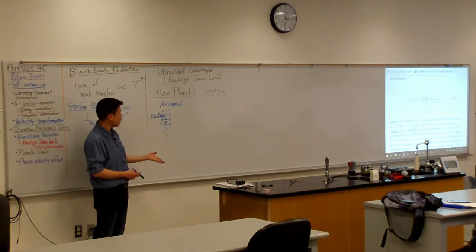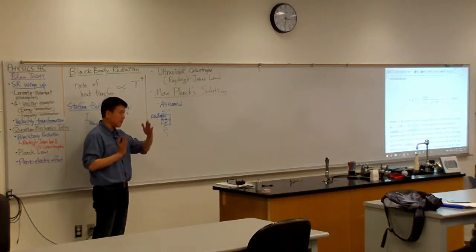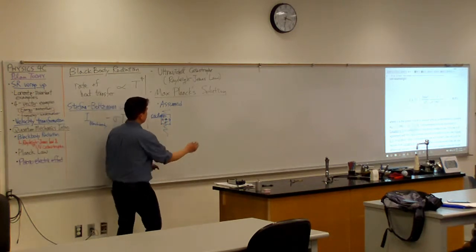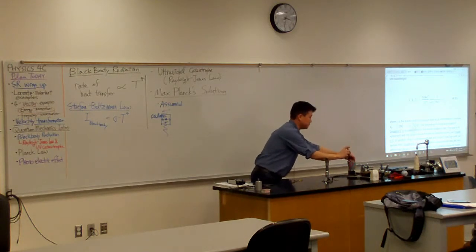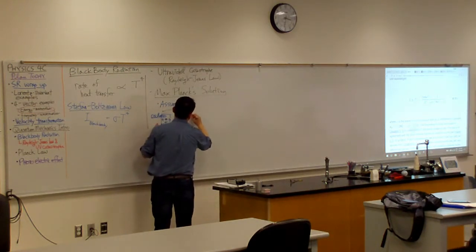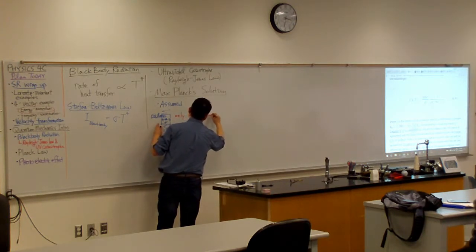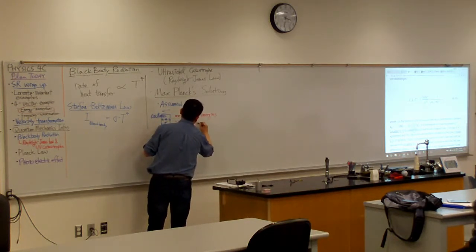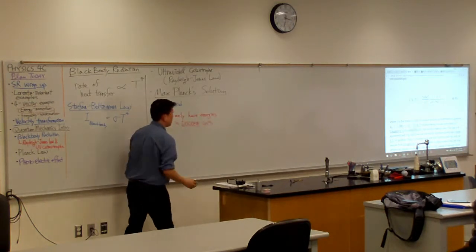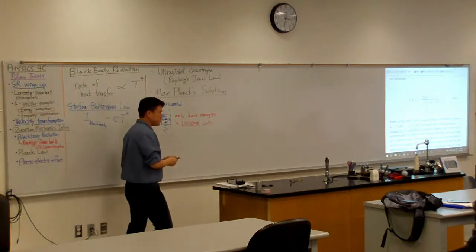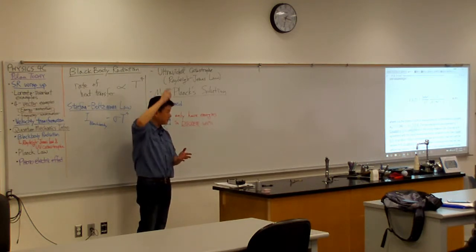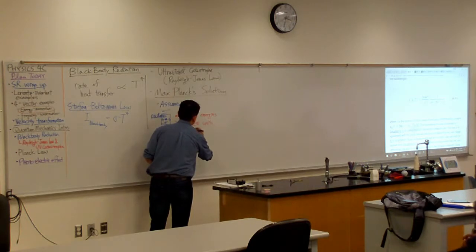So those black bodies are made up of an oscillator. And this is what Planck assumed. He was trying to just come up with a solution, where something would limit the amount of energy that can be emitted at the high frequency limit. So he assumed, okay, this oscillator, it can only have energies, only have energies in discrete units. And he said, this discrete unit of energy.